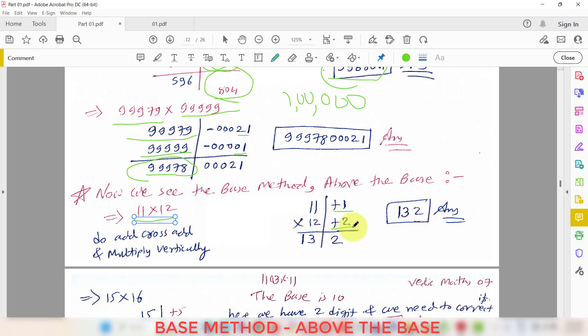Now next is 17 times 18. So 17 is excess of 10 by how much? 7. 18 is excess of 10 by how much? 8. So 17 plus 8 that is 25 and 7 times 8 is 56. But we need the answer in the one digit form. So 6 will be written as it is, 25 plus 5 that is 30. So this is our final answer.